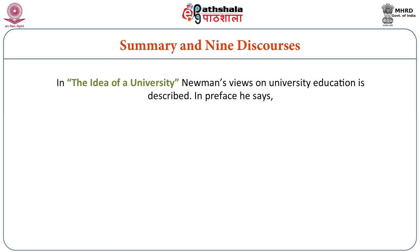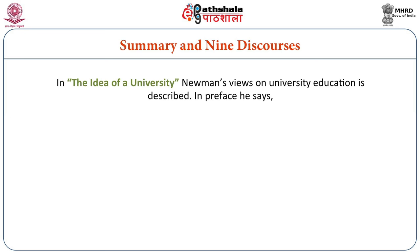In The Idea of a University, Newman's views on university education are described. In the preface, he says: 'The view taken of a university in these discourses is the following — that it is a place of teaching of universal knowledge. This implies that its object is on the one hand intellectual, not moral, and on the other that it is the diffusion and extension of knowledge rather than the advancement. If its object was scientific and philosophical discovery, I do not see why a university should have students. If religious training, I do not see how it can be the seat of literature and science.'